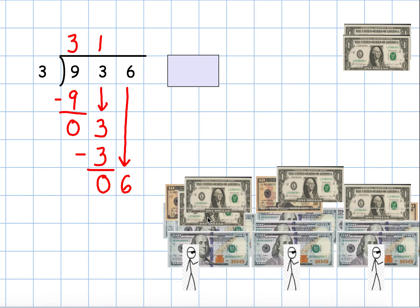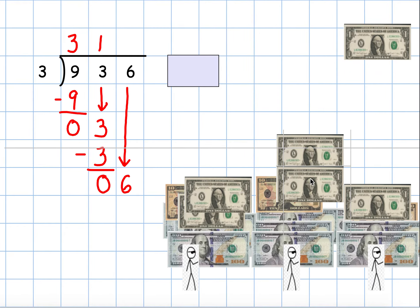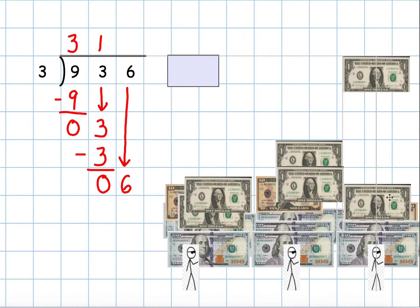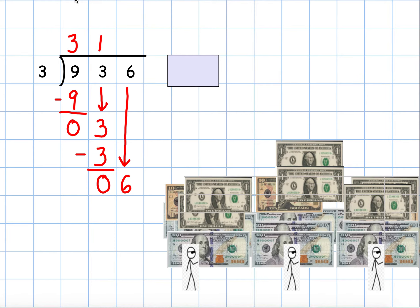I can give one to this friend, and one to this friend. I just gave each of my friends two $1 bills. I gave away all six of my $1 bills because two times three is six.